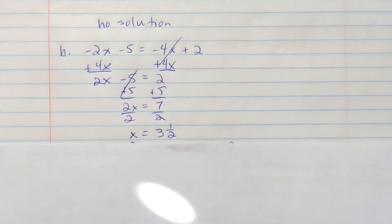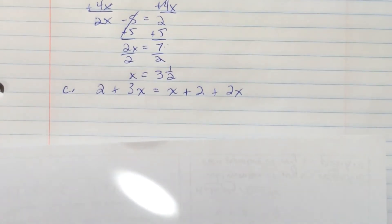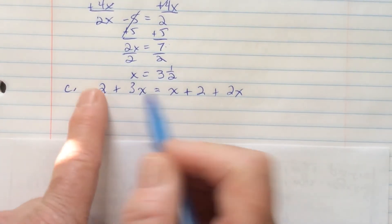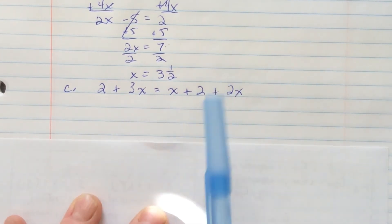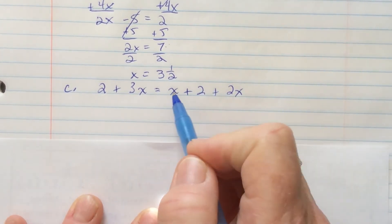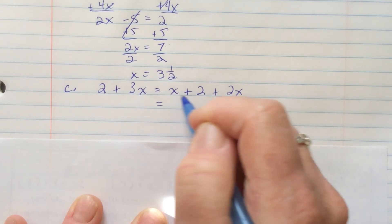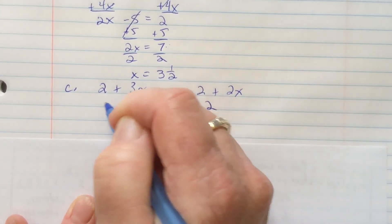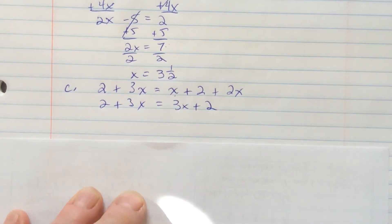All right, let's take a look at C. 2 plus 3x equals x plus 2 plus 2x. First, I need to clean this up a little bit by adding together this x and that x. So, if I have 1 and I get 2 more, now I have 3x plus 2. 2 plus 3x doesn't change.